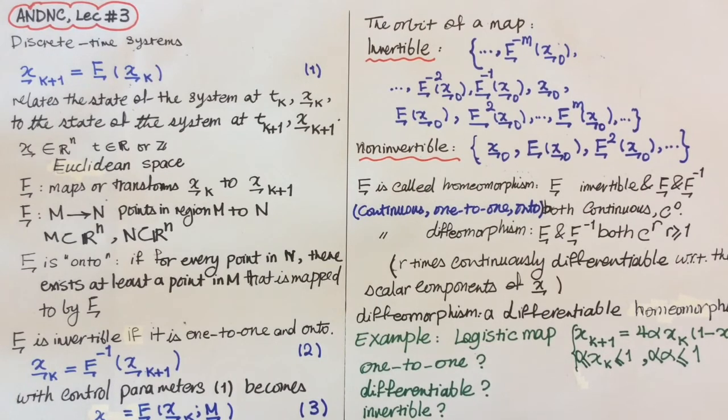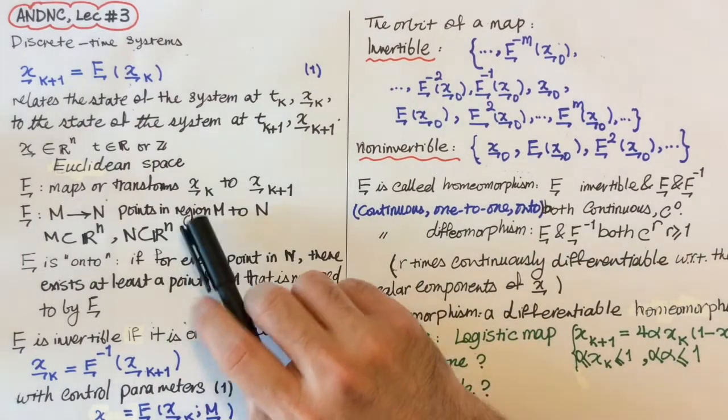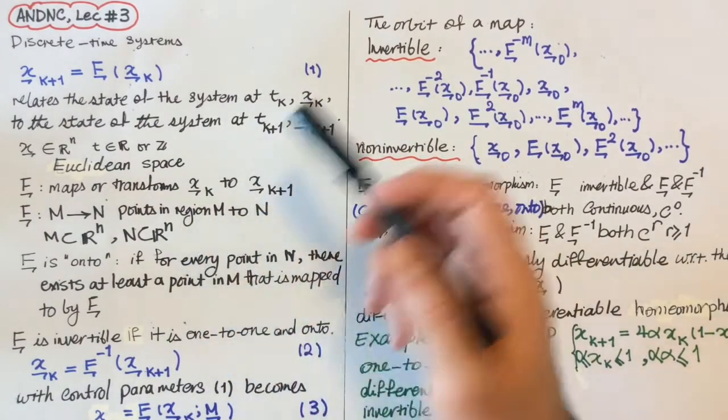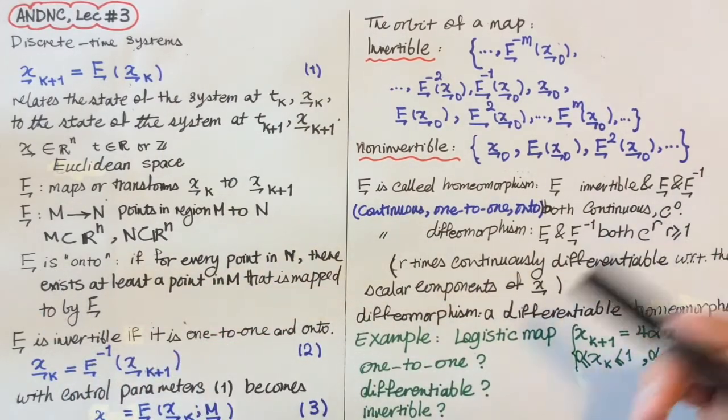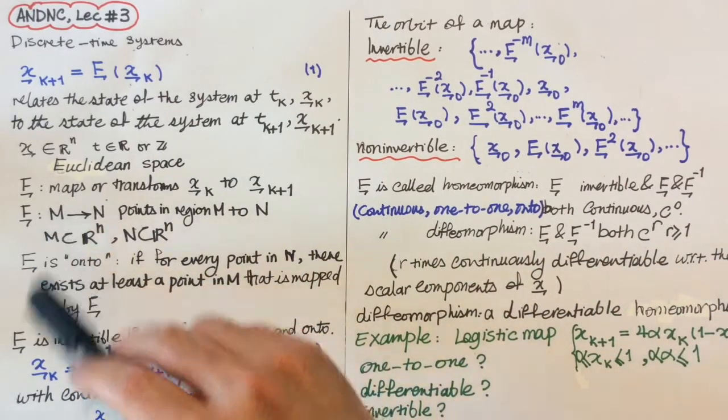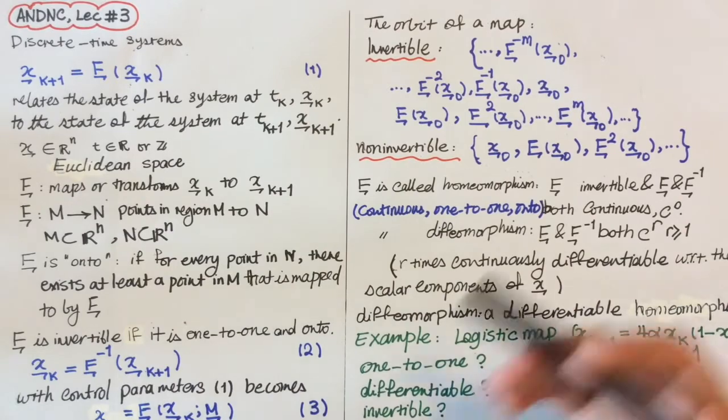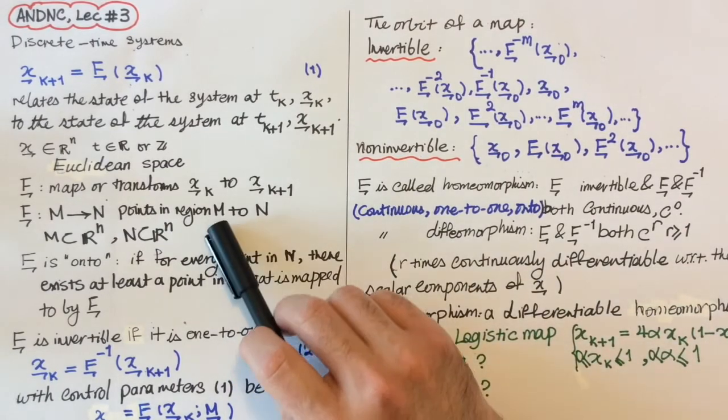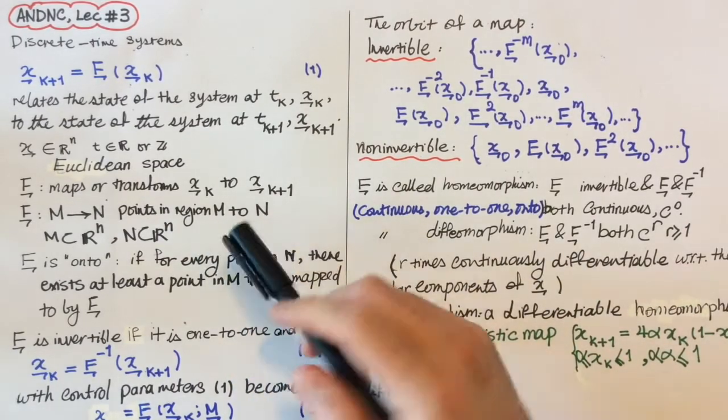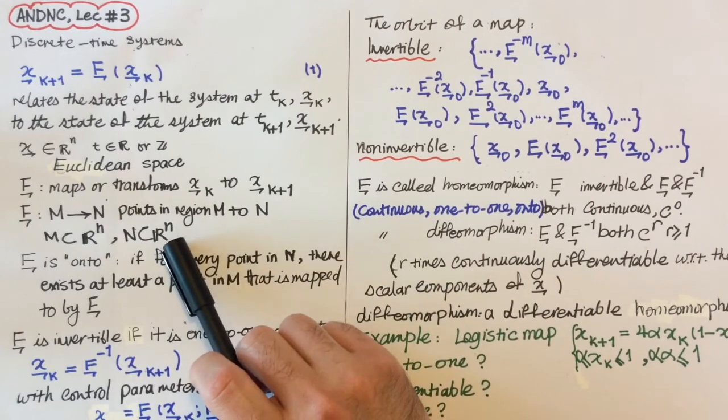The state x belongs to Euclidean space and transforms x_k to x_k+1. F is essentially a function from M, which are points in a region of R^n, to N, which are points in, again, a region of R^n.